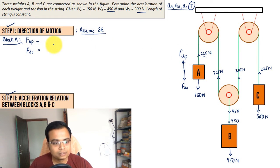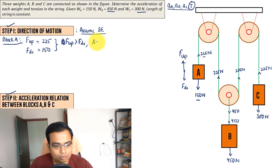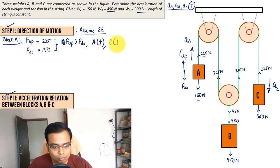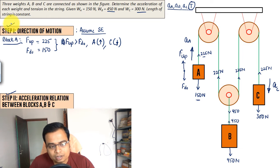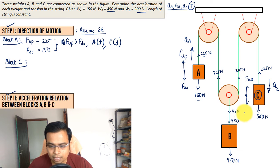For block A: upward force is 225N, downward force is 150N. Since F_up is greater than F_down, block A moves upward. If block A moves upward with acceleration a_A, then block C moves downward with acceleration a_C.